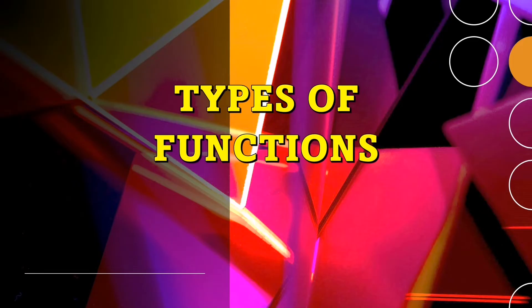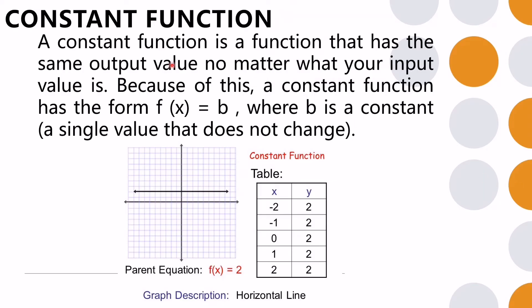The first type is the constant function — a function that has the same output value no matter what the input value is. A constant function has the form f(x) equals b, where b is a constant that does not change. For example, for inputs negative 2, negative 1, 0, positive 1, positive 2, the y value is always 2. The graph of a constant function is a horizontal line.